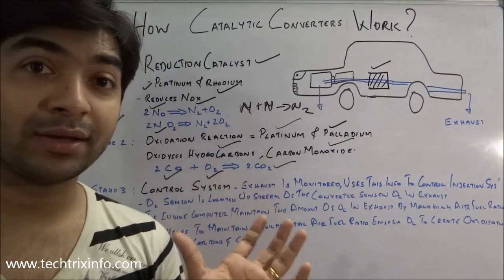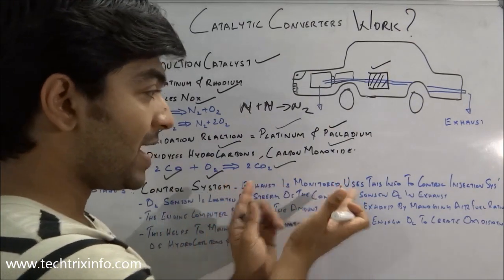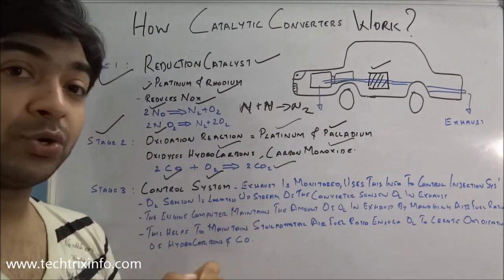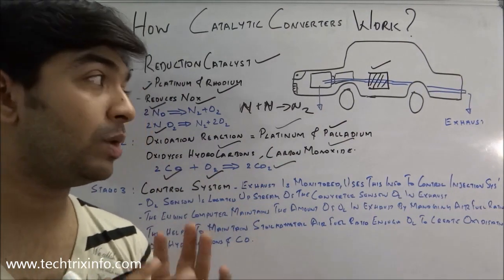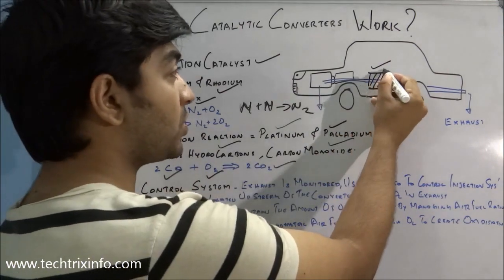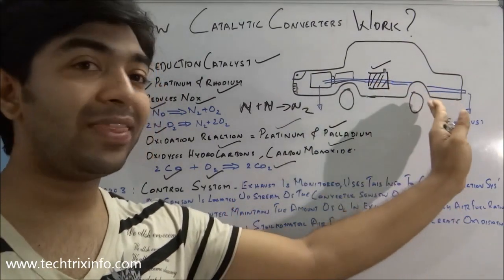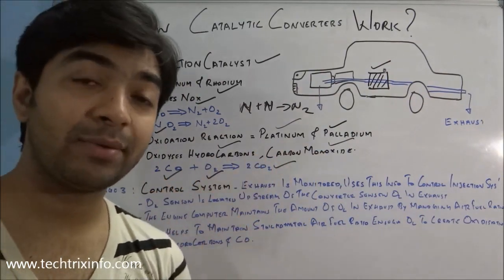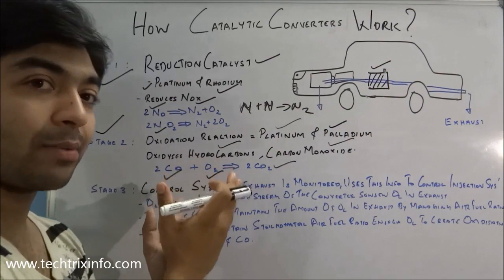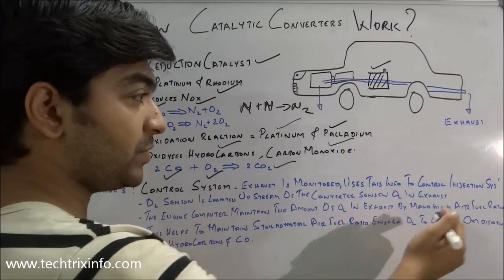In stage three, there is a control system with an intelligent computer that assists the engine. The exhaust stream is monitored by this computer, which uses that information to control the fuel injection system and maintain the stoichiometric air-fuel ratio. An oxygen sensor is located upstream of the converter and measures the amount of oxygen in the exhaust gas.